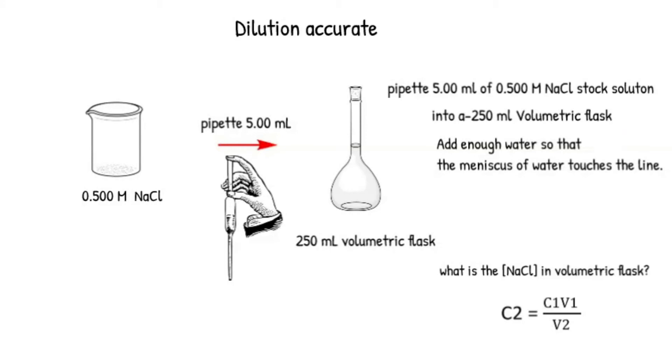We could use the formula C1V1 equals C2V2, rearranging so that C2 is isolated on one side to find its concentration.